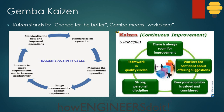In this video we will learn about Gemba Kaizen. The word Kaizen means 'change for the better' and Gemba means 'workplace,' so it's basically the improvement that is done at the workplace. The activity cycle of Kaizen is the same as the PDCA cycle.